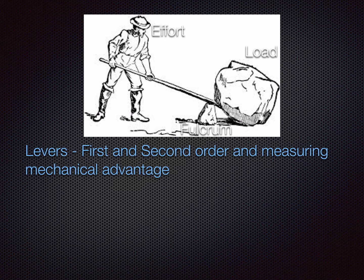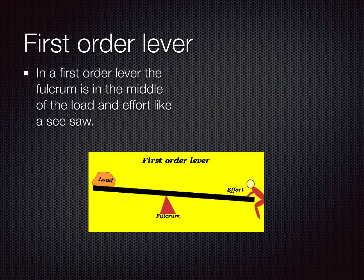The names don't really matter as much as long as you know the difference between them. To begin with, the first order lever — as you can see here, it's very much like a seesaw. So the fulcrum, or the point upon which we swing upon, is in the middle, the load's at one end and we're applying effort at the other end. And that's what makes a first order lever.